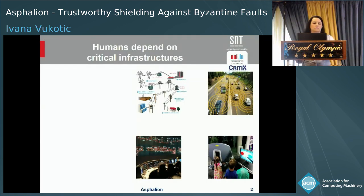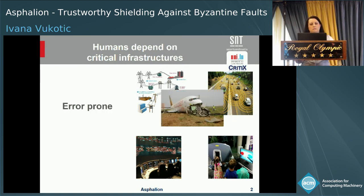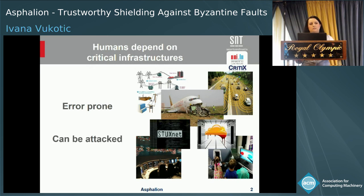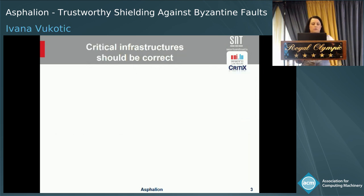Our lives strongly depend on different critical information infrastructures, such as power grids, autonomous vehicles, train control systems, surgical robots, and many others. Unfortunately, due to the complexity of these systems, errors might exist. If we add sophisticated attacks such as Stuxnet and WannaCry on top of this, it is clear that ensuring correct behavior of these systems is very difficult.